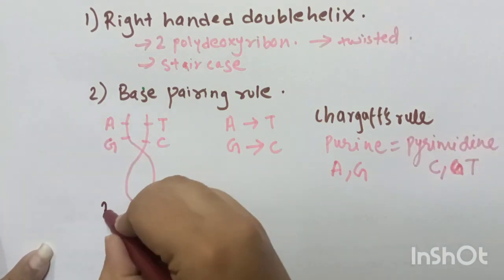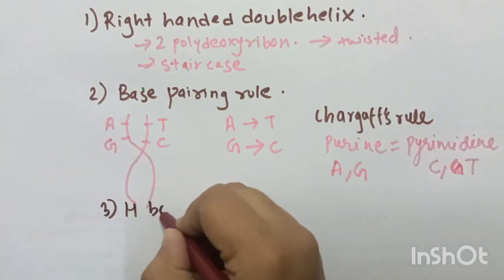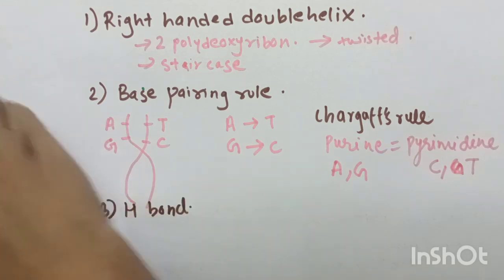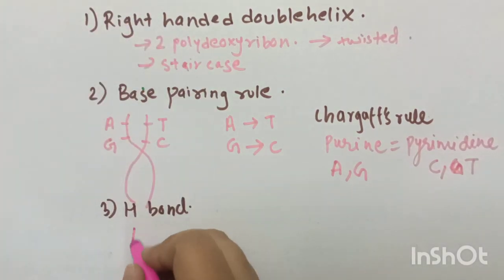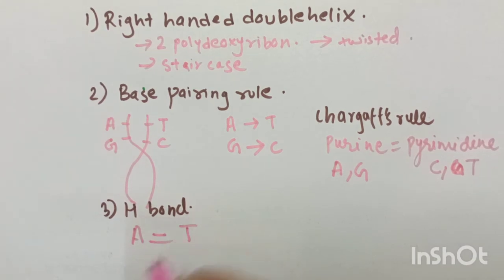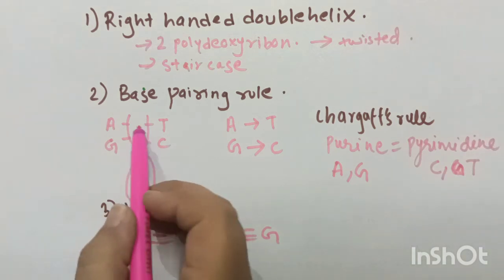Number 3, Hydrogen bond. Adenine pairs with thymine with 2 hydrogen bonds and cytosine pairs with guanine with 3 hydrogen bonds. This hydrogen bond helps to stabilize the DNA and hold the strands together.